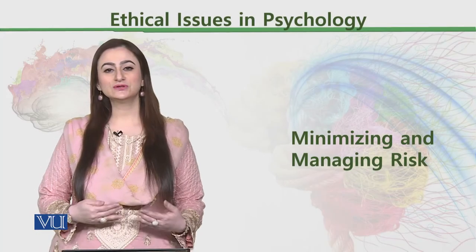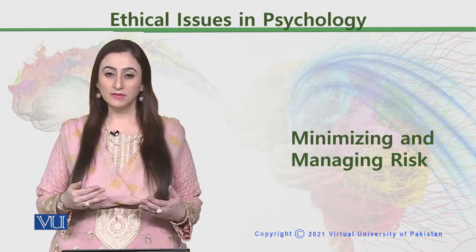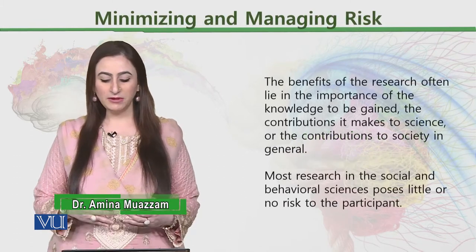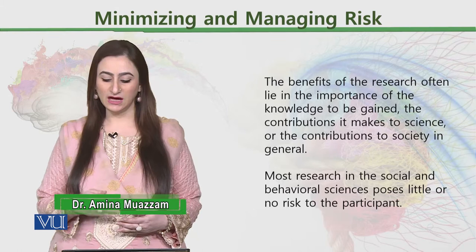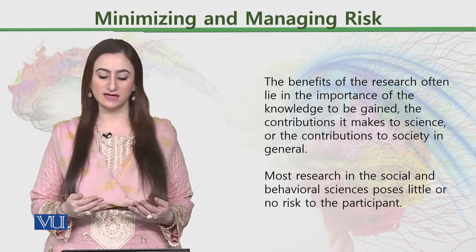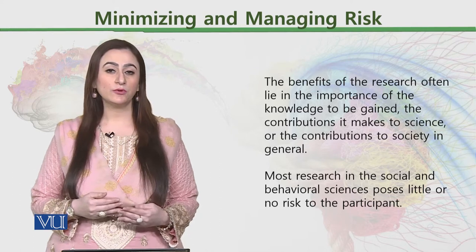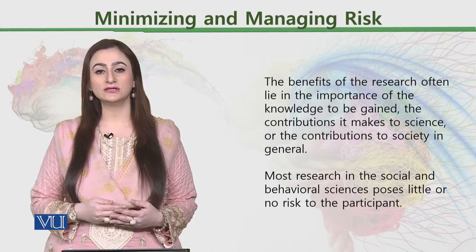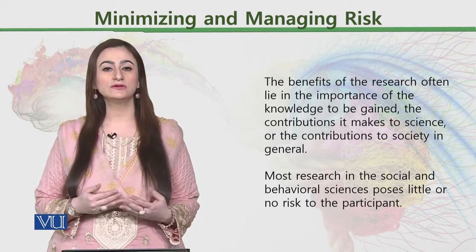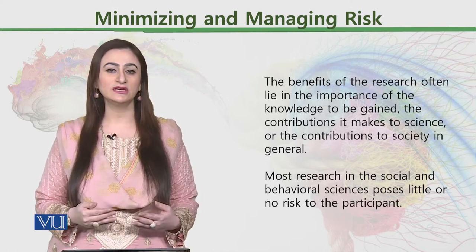The main objective of research in social sciences is primarily concerned with minimizing and managing risk. The benefit of research often lies in the importance of knowledge to be gained and the contribution to science or to society in general. It is very important that whatever research we conduct in social sciences gives some benefit to society, mankind, or any person involved in the research directly or indirectly.